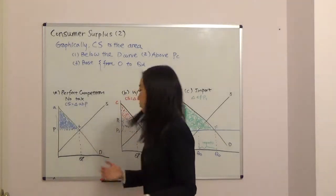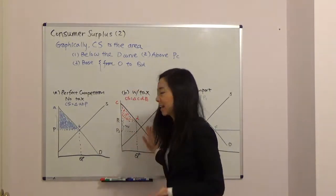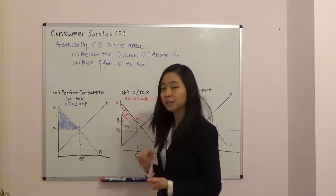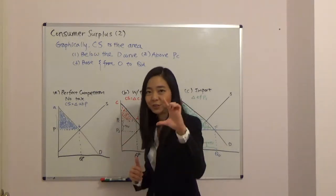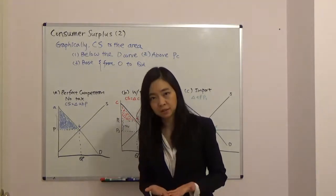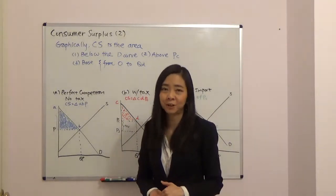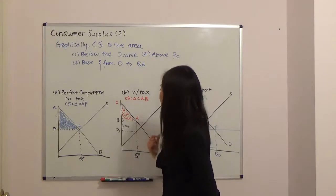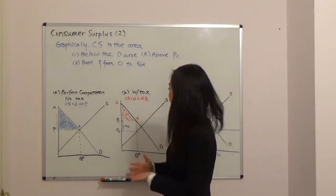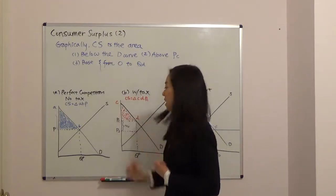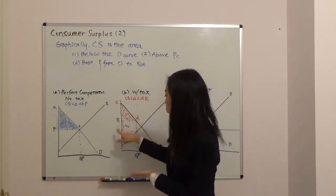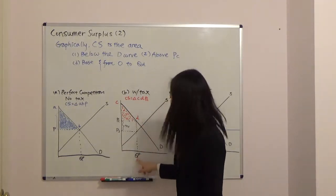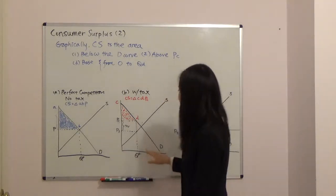Now what happens if you have a tax? A tax is a wedge between the price paid by the consumer and the price received by the seller. In that case, the price paid by the consumer will be higher than the price received by the seller — the difference is taken away by the government. Your equilibrium quantity will be smaller, and consumer surplus will be equal to the area below the demand curve, above the price paid by the consumer PC, which is higher than the price received by the seller. The base of the triangle is from zero to Q star.